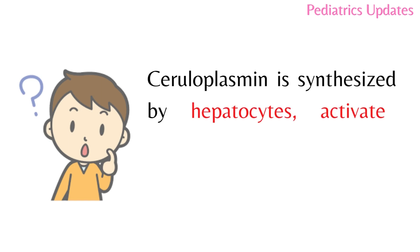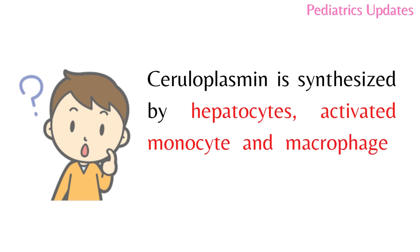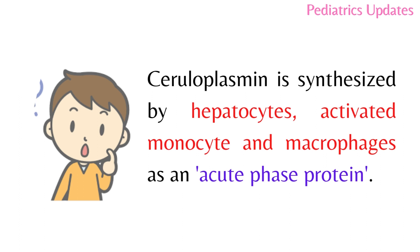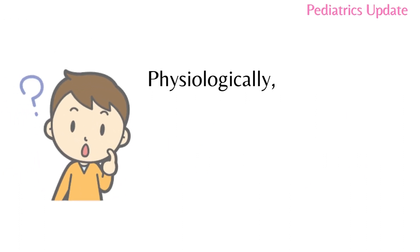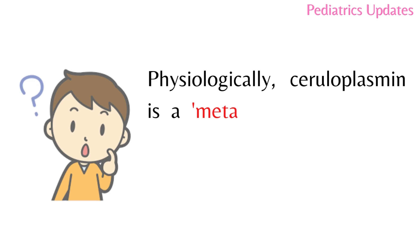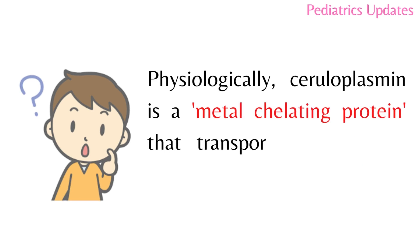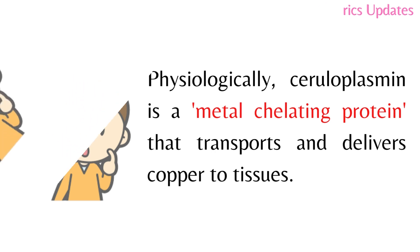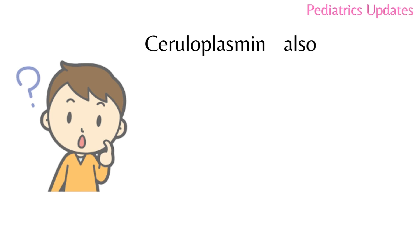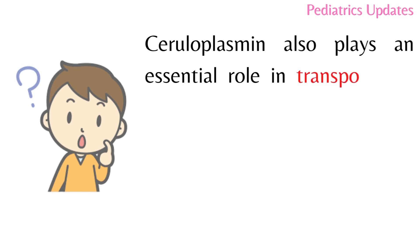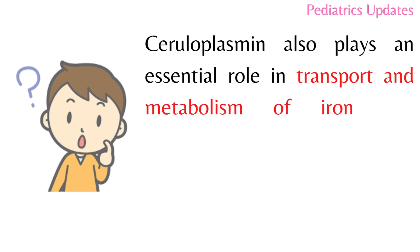Ceruloplasmin is synthesized by hepatocytes, activated monocytes, and macrophages as an acute phase protein. Physiologically, ceruloplasmin is a metal chelating protein that transports and delivers copper to tissues. Ceruloplasmin also plays an essential role in the transport and metabolism of iron.